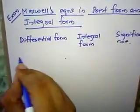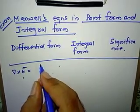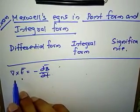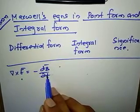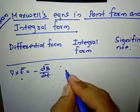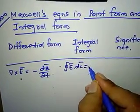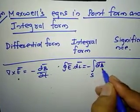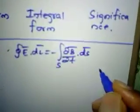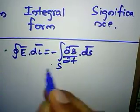The first Maxwell's equation: curl of E-bar = −∂B-bar/∂t, that is the curl of electric field intensity equals minus ∂B/∂t. In integral form: closed line integral of E-bar · dL-bar = −surface integral of ∂B-bar/∂t · ds-bar. This equation was derived starting from Faraday's law.